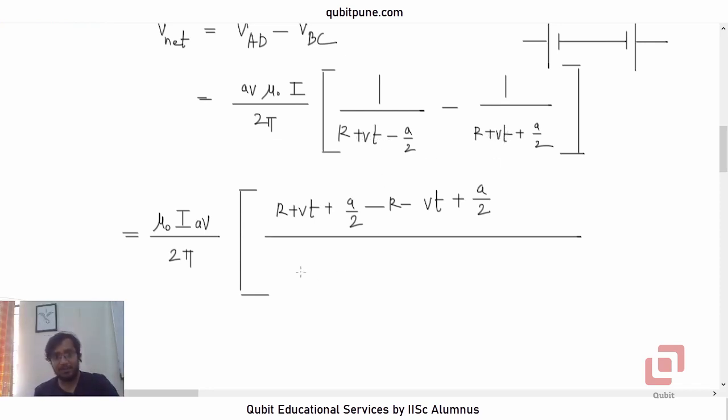R and VT will be negative. A by 2 will become positive. 1 upon R plus VT minus A by 2 into R plus VT plus A by 2. So, that is A minus B times A plus B. So, that will be A squared minus B squared. And what will be the numerator here? R, R will go. VT, VT will go. So, A by 2 plus A by 2, A. So, that will be A.